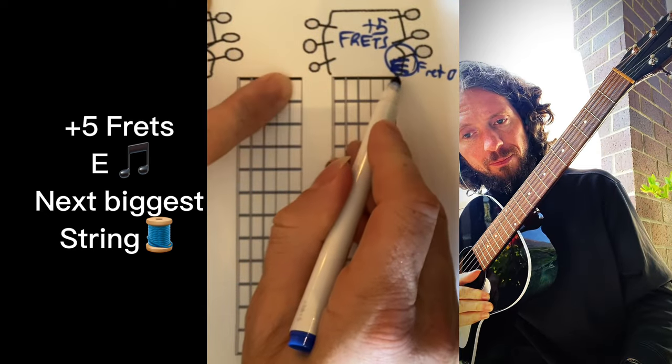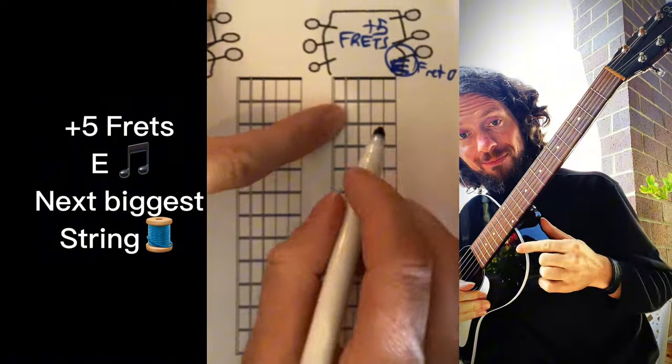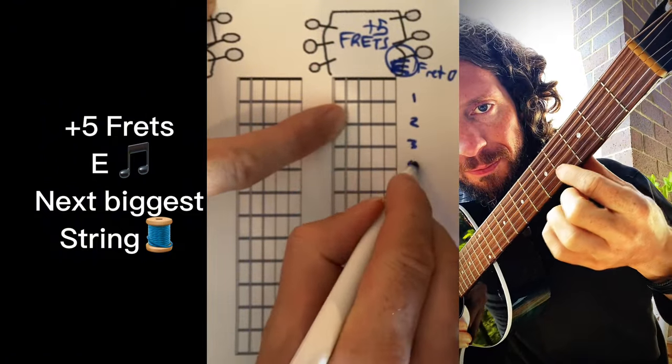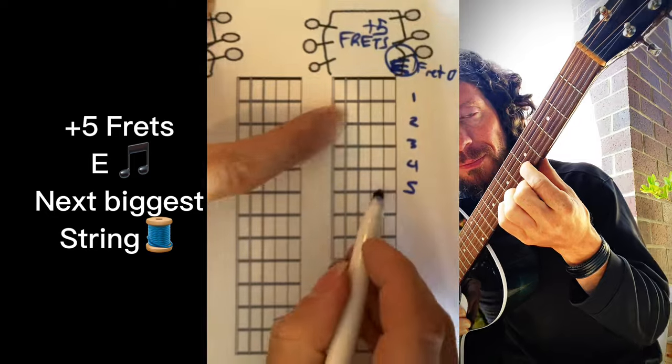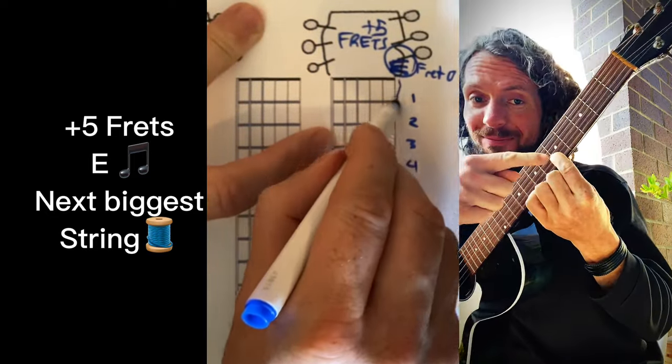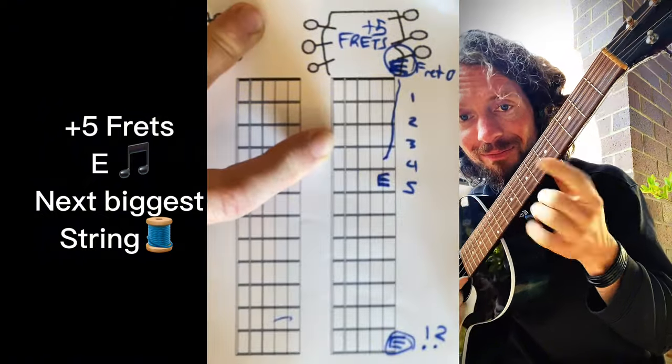So if you play the smallest string open E, the next one, if you count your frets up one, two, three, four, five, over on the next string is also E. From here to there, five frets higher from the smallest string to the second string is also E.